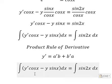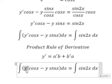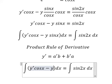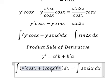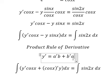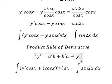This is the first derivative of a multiplied by b. Negative sine x is the first derivative of cosine x. So the integration of this one, we have y equals ab.